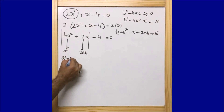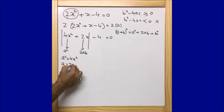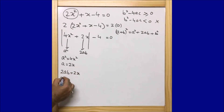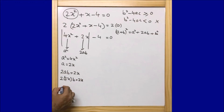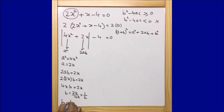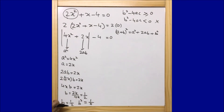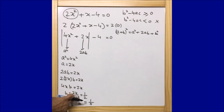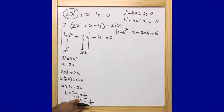Since a² = 4x², we have a = 2x. And since 2ab = 2x, substituting a = 2x gives 2·(2x)·b = 2x, so 4x·b = 2x, meaning b = 2x/4x = 1/2. Therefore b = 1/2 and b² = 1/4.